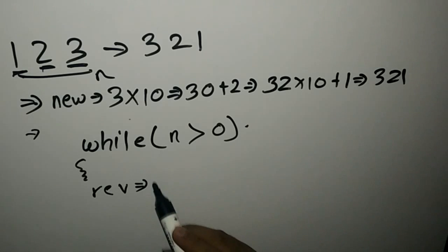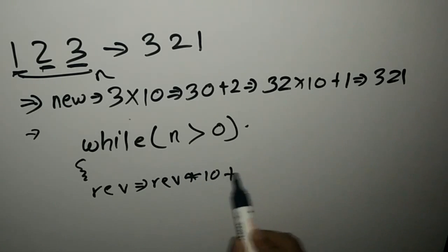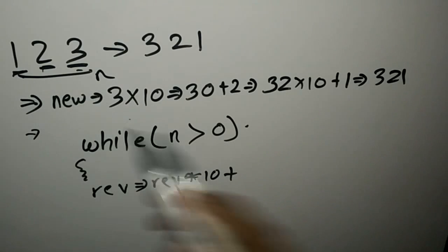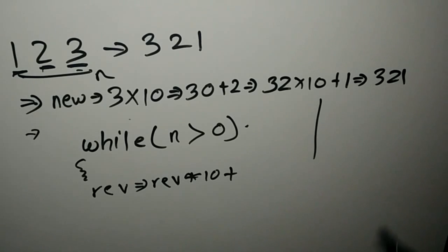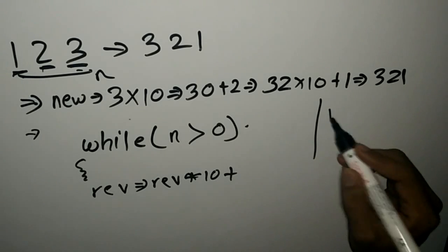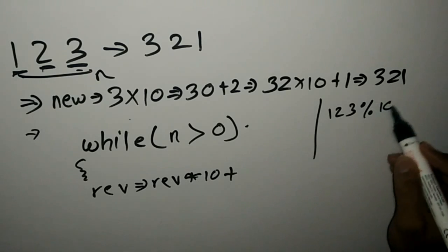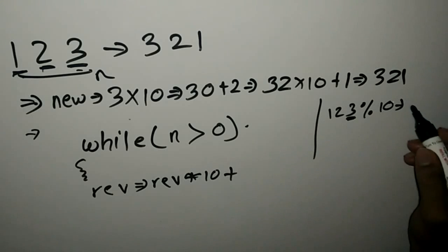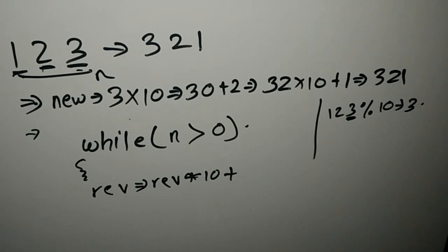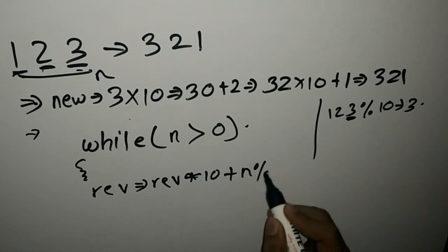As we keep going in each iteration of the loop, we have to take reverse multiplied by 10 and then add the new digit which we get. Now how to take the new digit — the digit from the units place — we use the modulus operator. If the number is 123 and we use mod 10, it gives us the remainder, which in this case is 3. So we get the units digit using n mod 10.